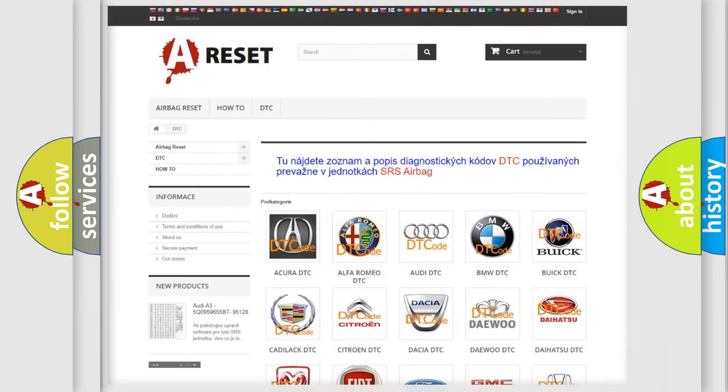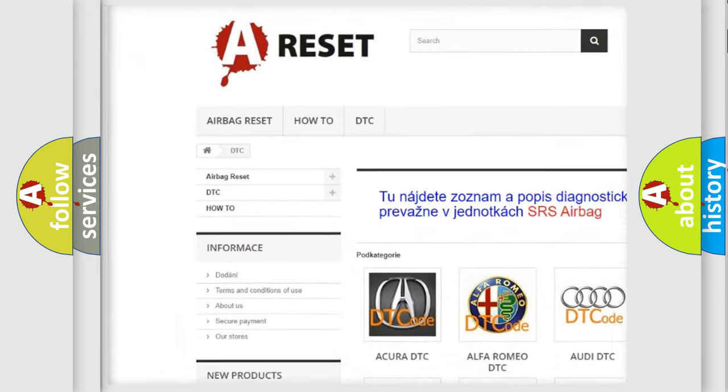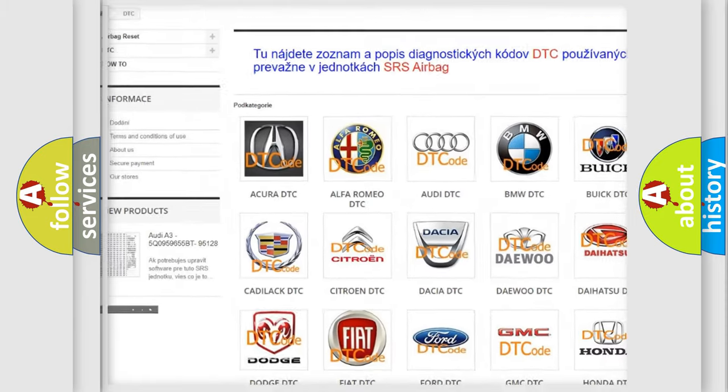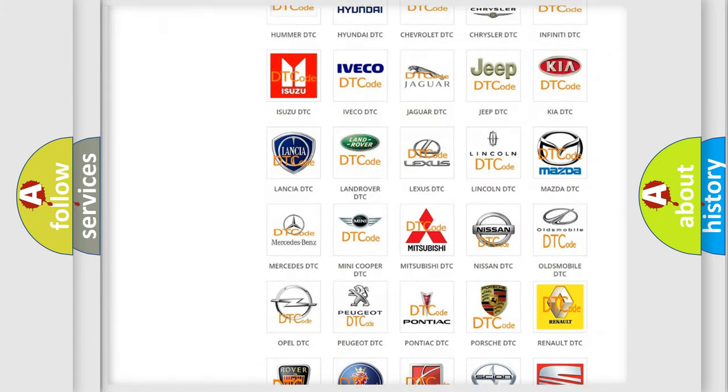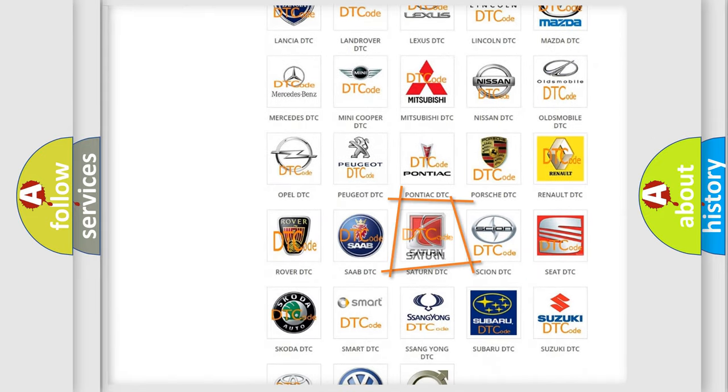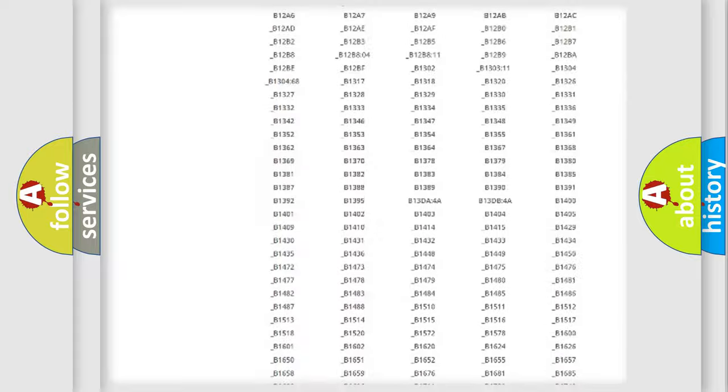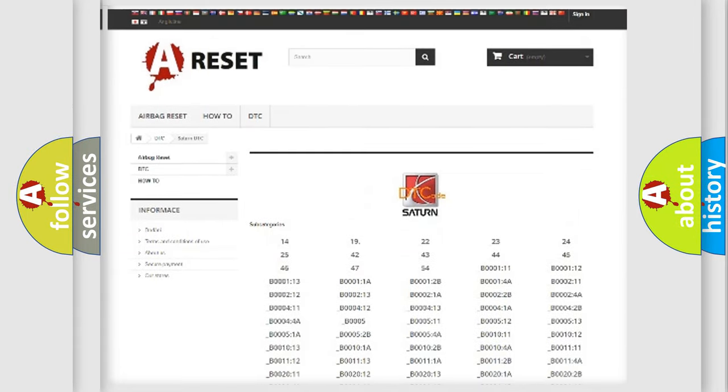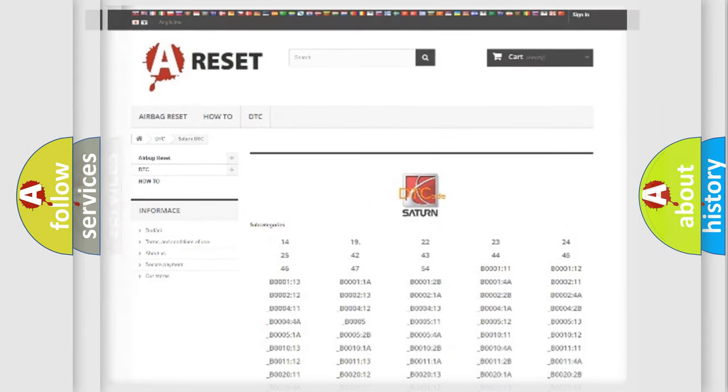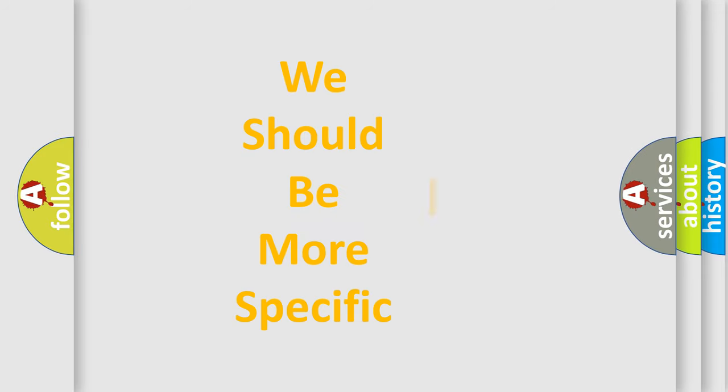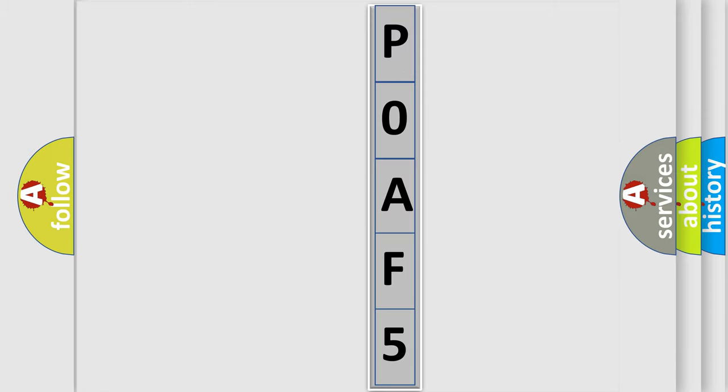Our website airbagreset.sk produces useful videos for you. You do not have to go through the OBD-2 protocol anymore to know how to troubleshoot any car breakdown. You will find all the diagnostic codes that can be diagnosed in Saturn vehicles, and many other useful things. The following demonstration will help you look into the world of software for car control units.